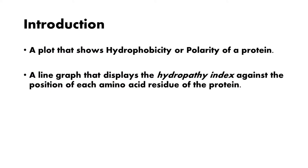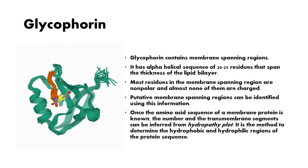Transmembrane proteins, for example glycophorin, contain membrane-spanning regions. They have alpha-helical sequences of 20 to 25 residues that span the thickness of the lipid bilayer. Most of the residues of these membrane-spanning regions are non-polar and almost none of them are charged.